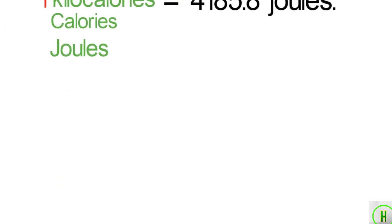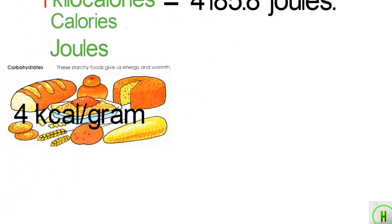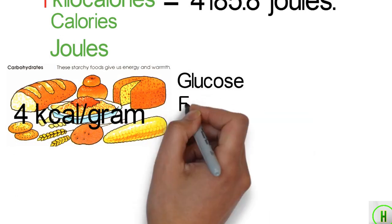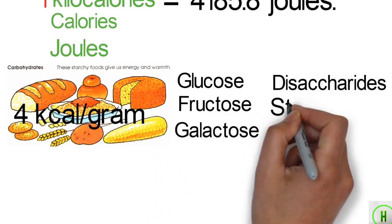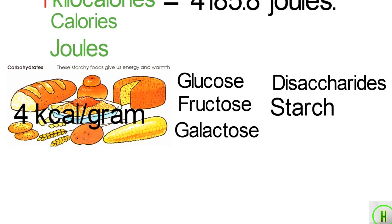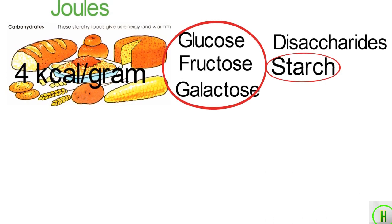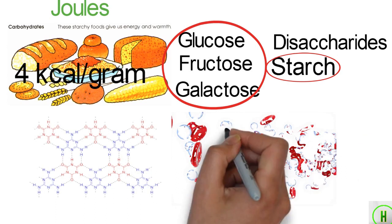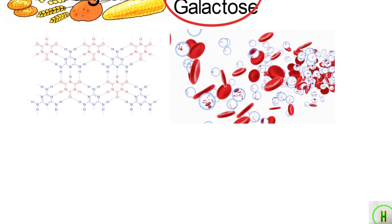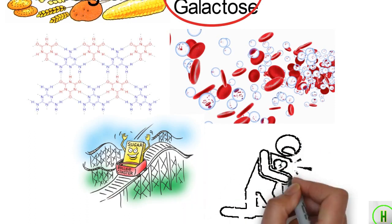Energy macronutrients include carbohydrates, at 4 kilocalories per gram. Carbohydrate molecules include monosaccharides such as glucose, fructose, and galactose, as well as disaccharides and polysaccharides such as starch. Nutritionally, polysaccharides are favored over monosaccharides because they are more complex, take longer to break down, and are absorbed into the bloodstream more slowly, meaning they do not cause major spikes in blood sugar levels, which are linked to heart and vascular diseases.